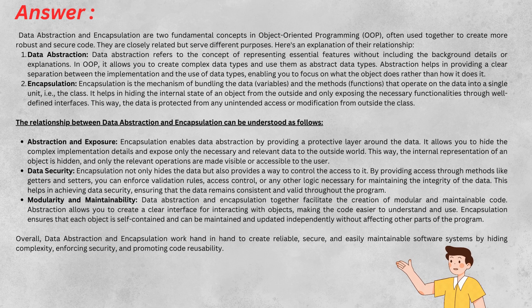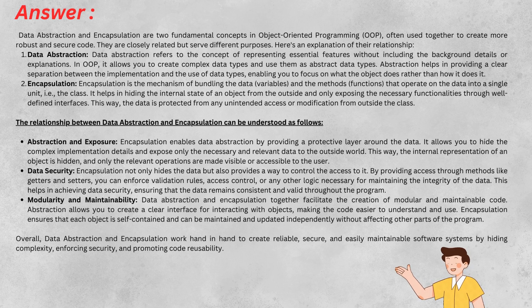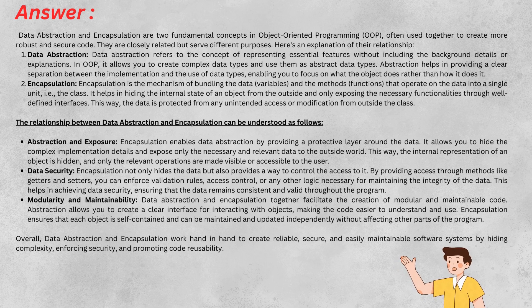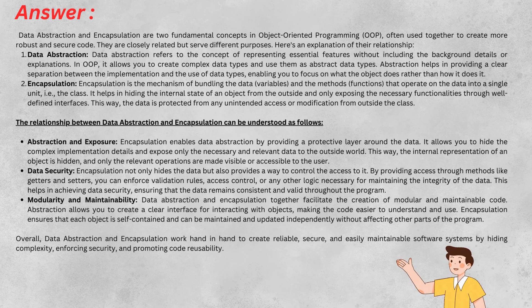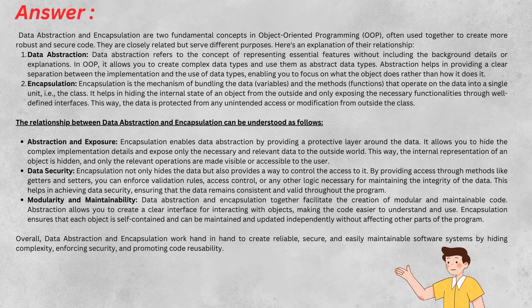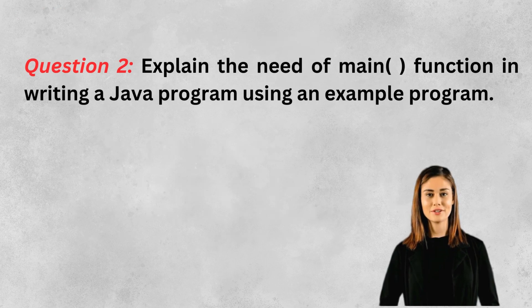Together, they hide complexity, enhance data security, and promote modular maintainable code. Abstraction defines what an object does, and encapsulation focuses on how it's done, ensuring data integrity and controlled access.